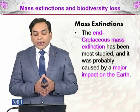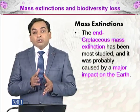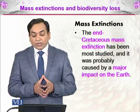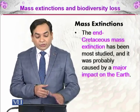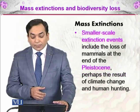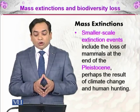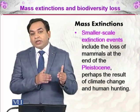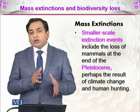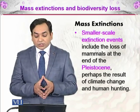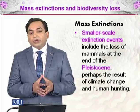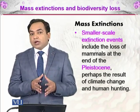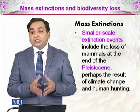The End-Cretaceous mass extinction has been more widely studied. It is called the KT boundary in fossil terms and was probably caused by a major impact on the Earth. A smaller-scale extinction event includes the loss of mammals in the Pleistocene, which spans from two and a half million years ago to 11,000 years ago — also called the ice ages. During this period, a lot of climate change occurred and humans were also responsible for wiping out some species by hunting, such as the woolly mammoth.